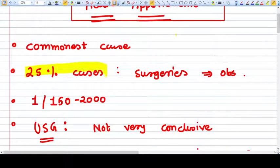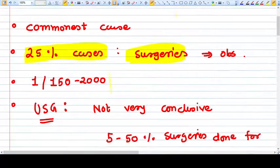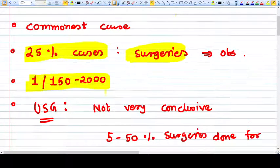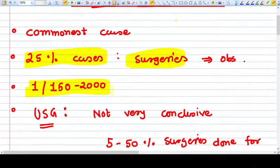Twenty-five percent of surgeries that happen for non-obstetric causes are due to acute appendicitis. The incidence is one in 150 to 2000 pregnancies. Now, how does it present?